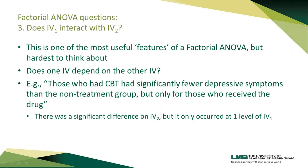Let's finish up the video talking about the last question that a factorial ANOVA can answer, which is one of the most difficult ones to think about. But it's one of the most useful features of a factorial ANOVA, which is an interaction. The best way to think about an interaction is simply: does one independent variable depend on the other independent variable? Does one factor depend on another?